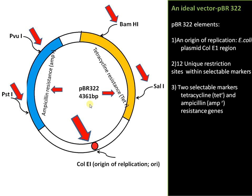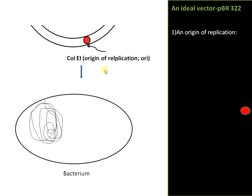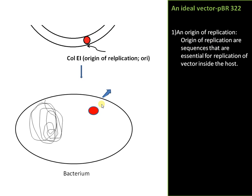This vector is 4361 base pairs in length and is the most widely used vector in genetic engineering. The origin of replication (ORI) is derived from the E. coli plasmid. The function of ORI is that whenever we introduce this vector into a suitable host, ORI is the sequence essentially required for replication of this vector inside the host.